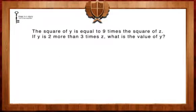The first step of this equation is to convert the sentences in this word problem into algebraic expressions. The first sentence, the square of y is equal to 9 times the square of z, can be rewritten as y squared equals 9z squared. The second sentence, y is 2 more than 3 times z, can be rewritten as y equals 3z plus 2.